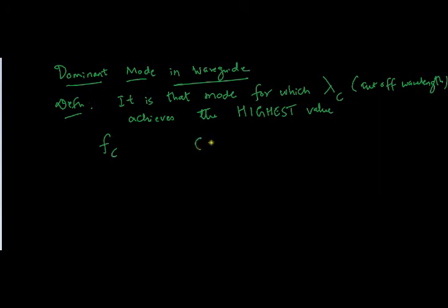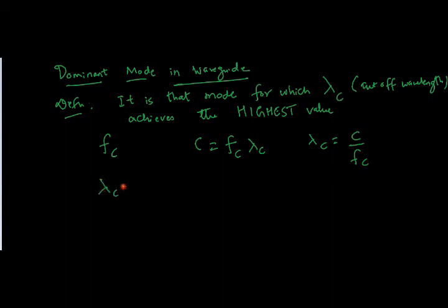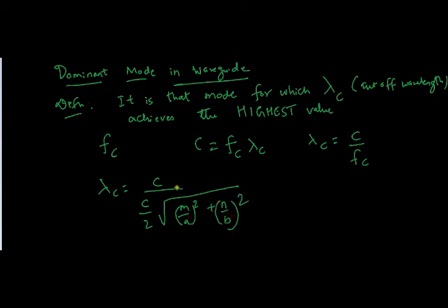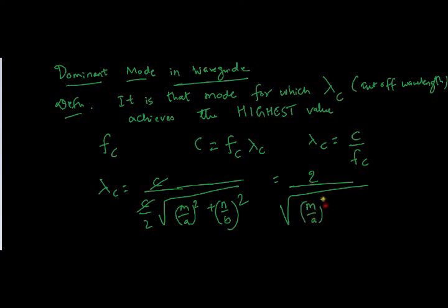We know the popular relation between frequency, wavelength, and speed of light: c equals fc times lambda_c. So lambda_c becomes c over fc. Substituting the expression for fc, lambda_c becomes c divided by (c/2) times the square root of (m/a)² + (n/b)². The c cancels, giving us 2 divided by the square root of (m/a)² + (n/b)².